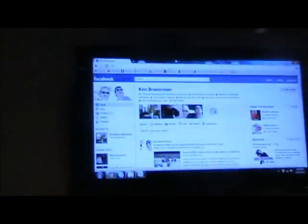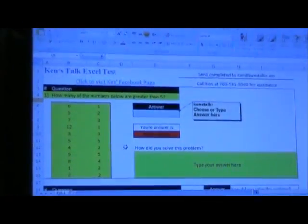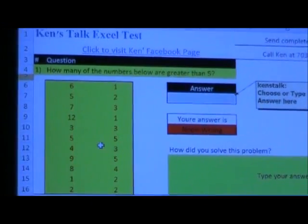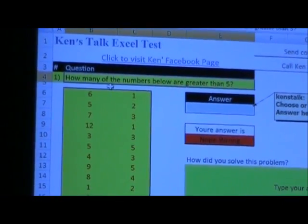We are at my Facebook page, but let's go to a file which you'll download. It's called the Ken's Talk Excel Test. It's five questions. Here we go. There's a little color scheme I kind of do with everything. Black is the question title. Here's a question.